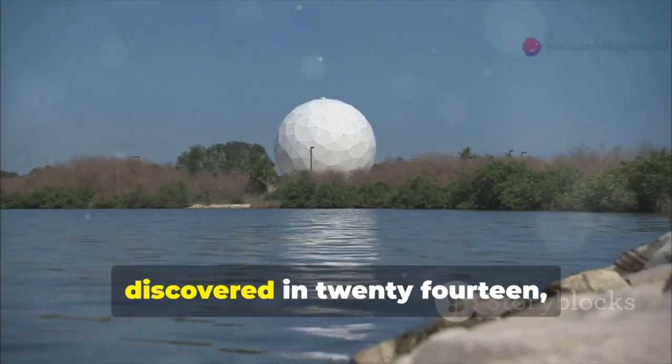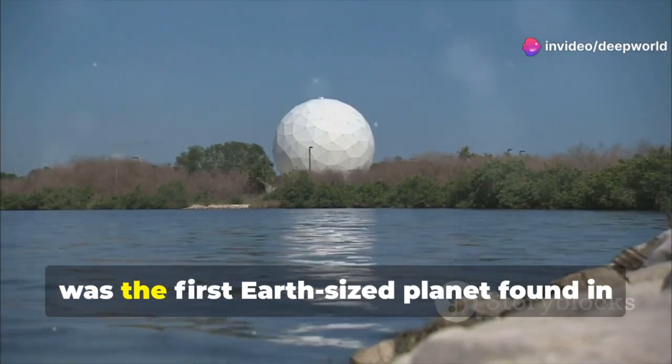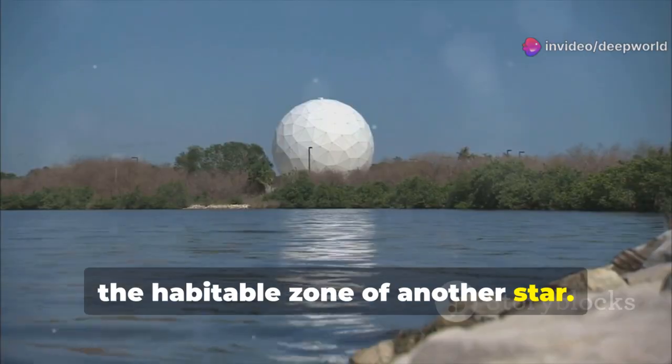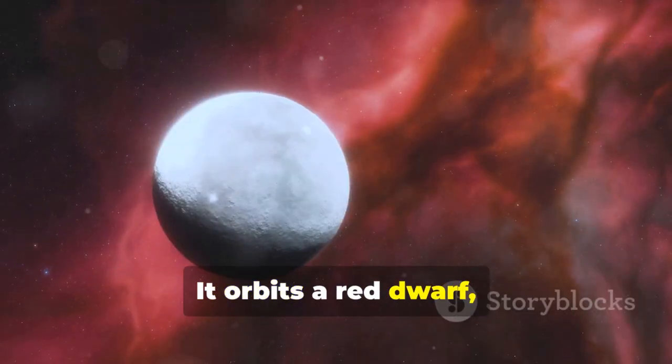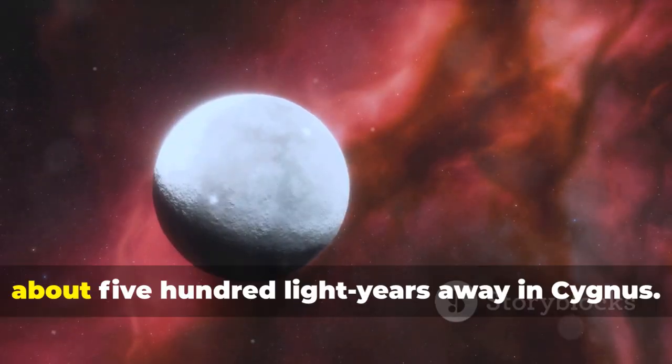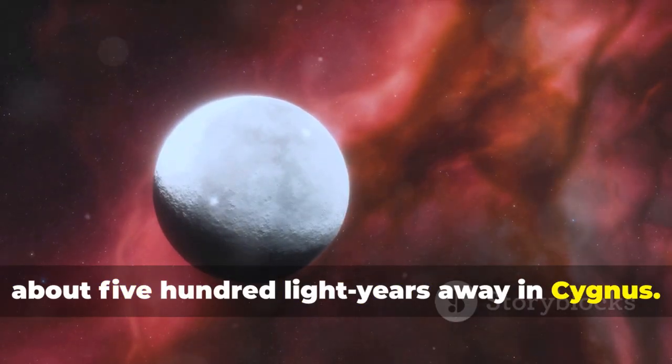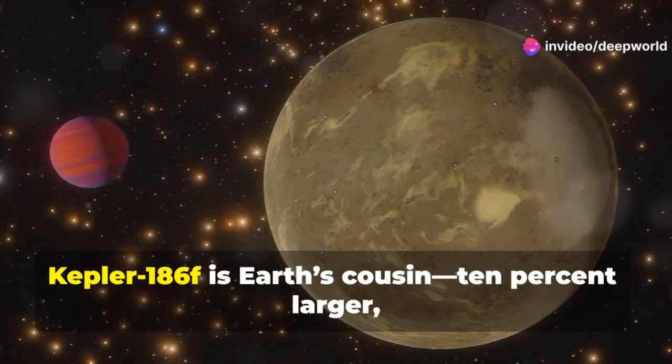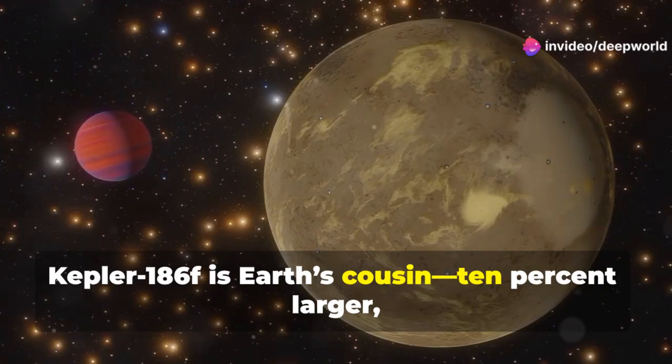Kepler-186f, discovered in 2014, was the first Earth-sized planet found in the habitable zone of another star. It orbits a red dwarf, Kepler-186, about 500 light-years away in Cygnus. The light we see left when Columbus sailed the Atlantic.